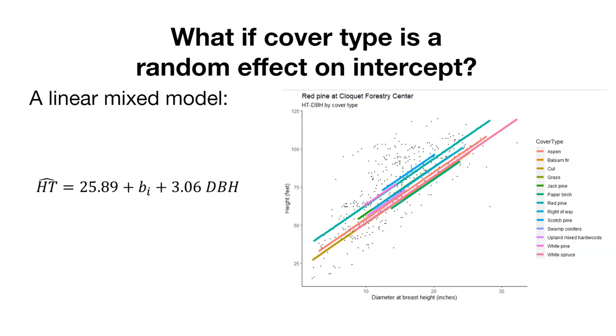What if we just looked at the cover type? I think there are 13 different cover types. What if we put a random effect on the intercept? Here again, we're predicting height. Note that this value is different from the previous slide. Our intercept is 25.89, and our slope is 3.06.